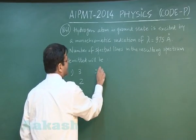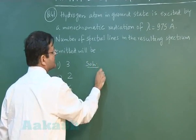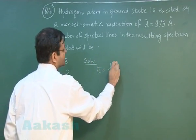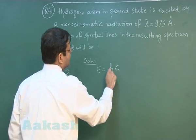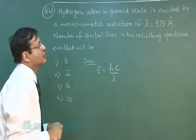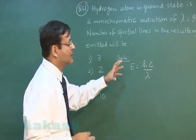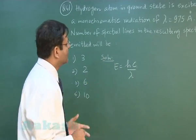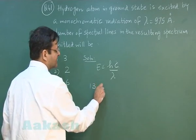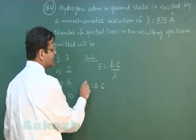Now you see in this question, first you have to calculate what is the energy contained in this wavelength lambda that is given to you, 975 angstrom. Whatever energy value you will be getting, it is a lengthy calculation. But whatever it is, you have to calculate this thing and add on to minus 13.6.